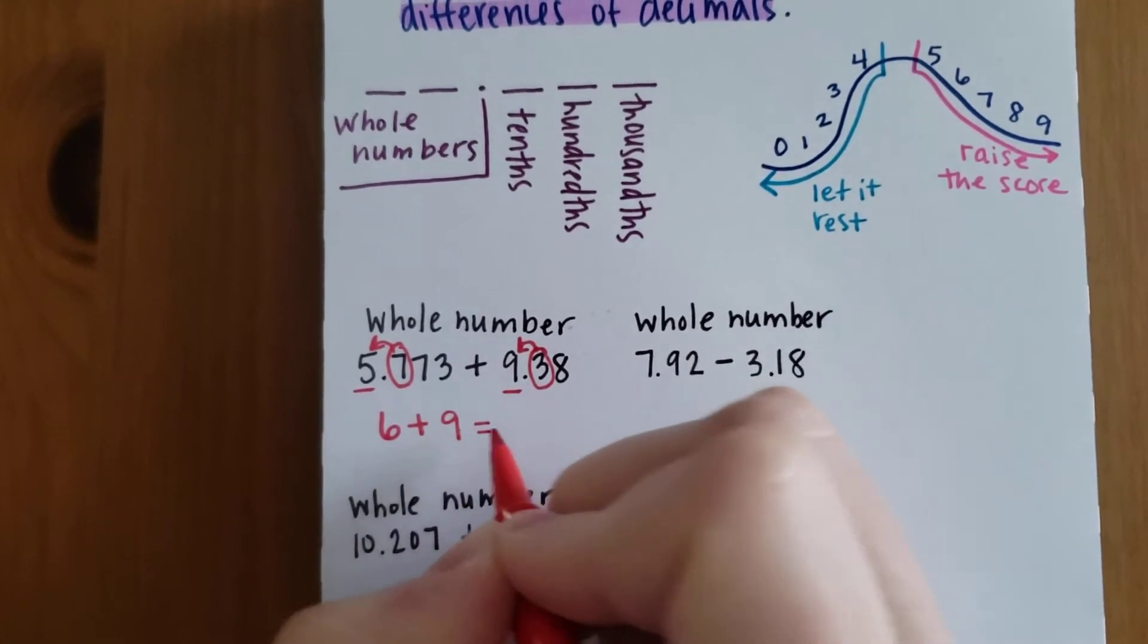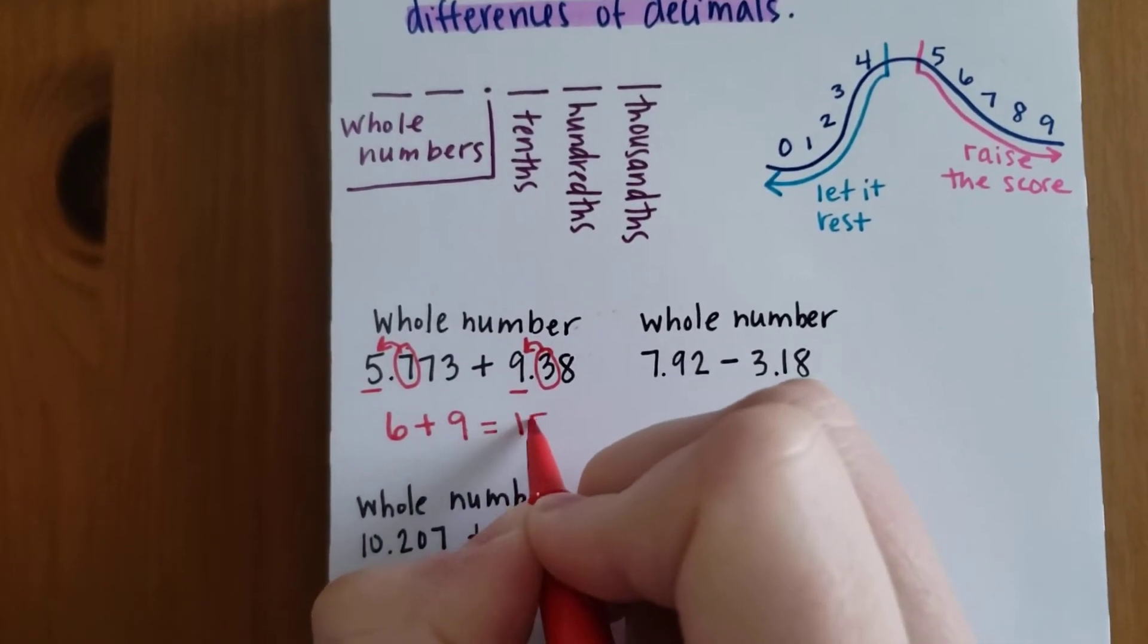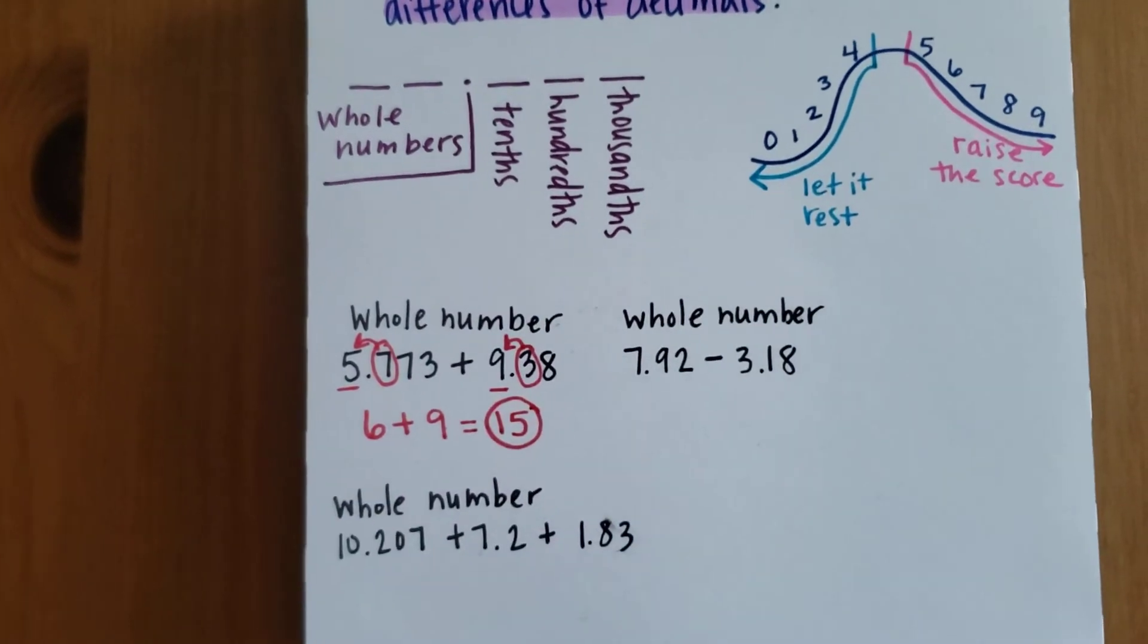So this is going to turn into 6 plus 9, which equals 15. Our final answer will be 15.